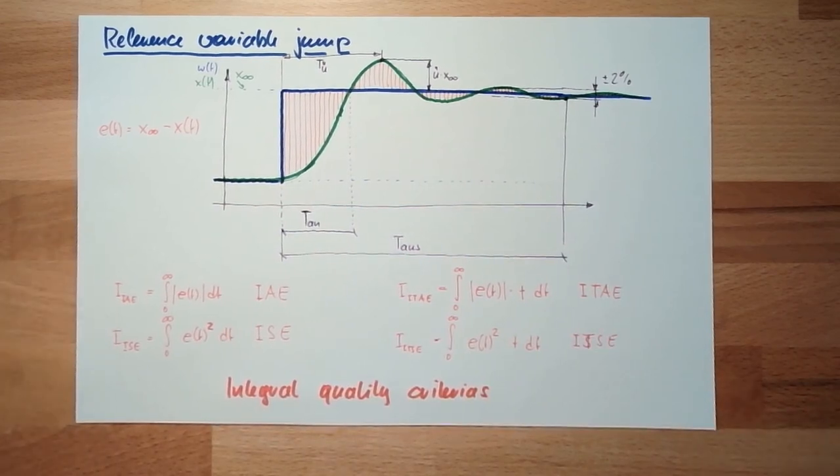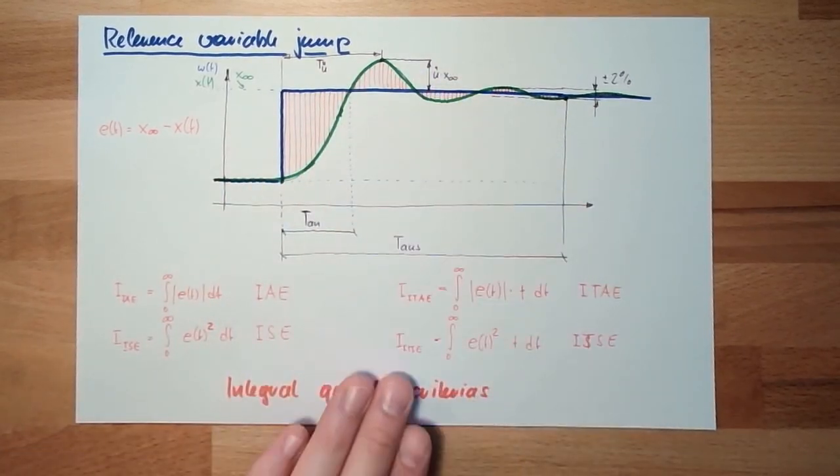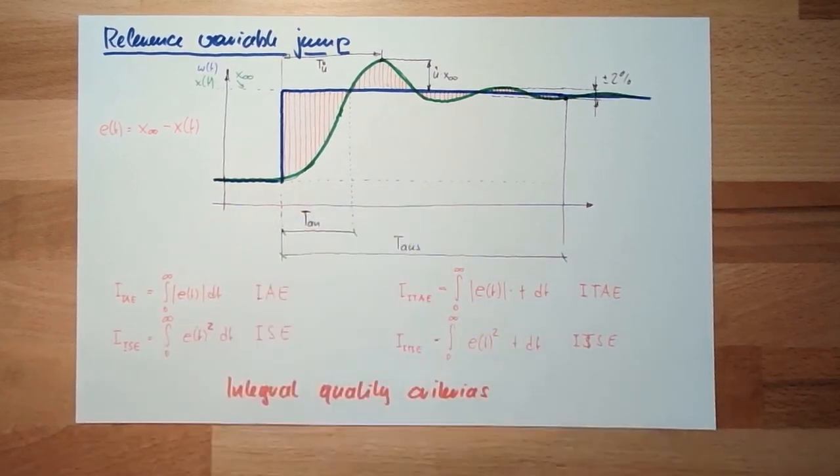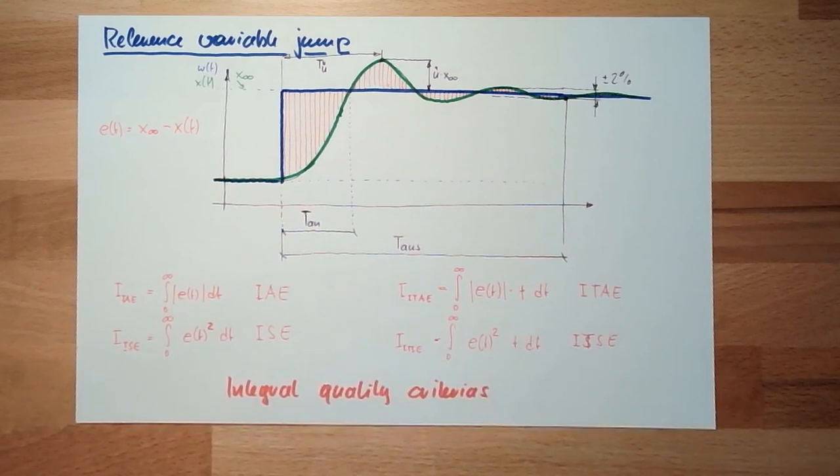Well, now we can tell if some system can be controlled or not, or hardly controlled. We can tell some numbers about the quality, and we can even give a number which is showing the quality just as a number. Here you see, this is what we call stable, that at least we will reach an end point. This is a very natural thing to demand, I want the control to be stable.